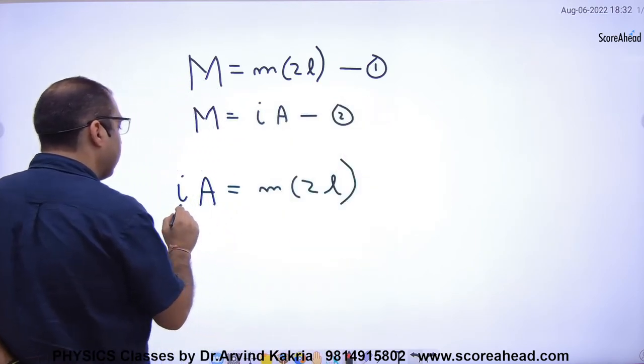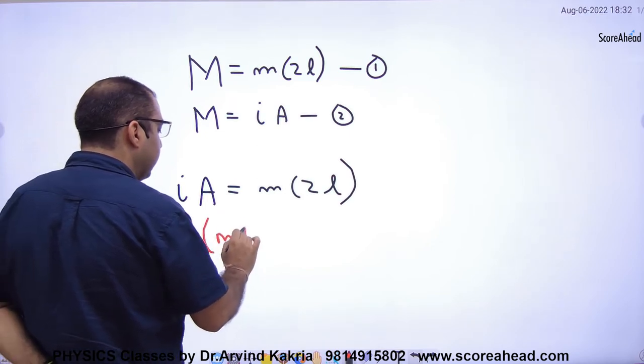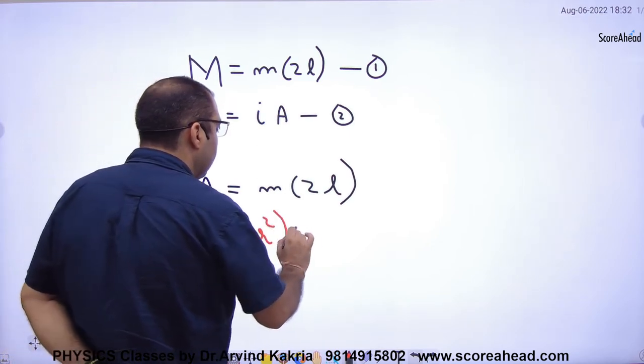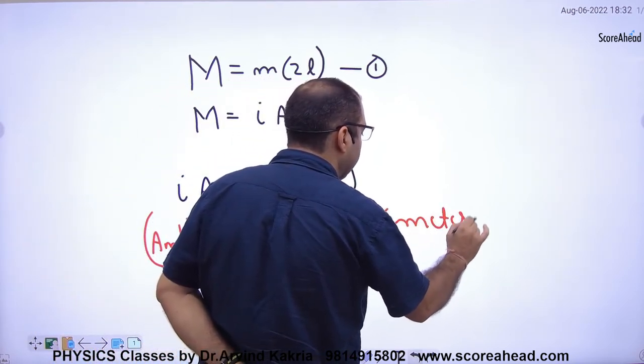So what does current mean? Ampere. What does area mean? Meter square. What does pole strength mean? Small M. And what does 2L mean again? Meter.